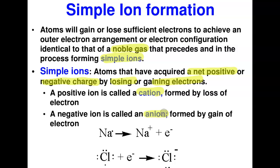Sodium has only one dot in its Lewis structure. It loses that one electron and becomes sodium (Na⁺). To determine the charge: sodium has 11 protons (unchanged), and as a neutral atom it had 11 electrons. After losing one, it has 10 electrons. So the charge equals 11 protons minus 10 electrons, which gives +1. That is why it has a +1 charge.